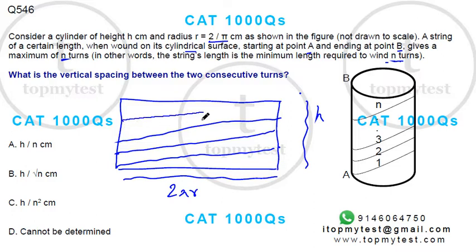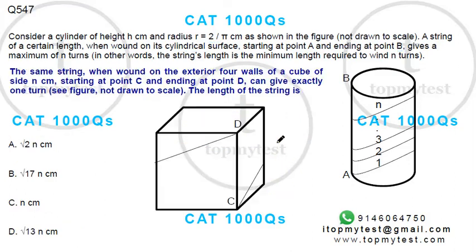To the last turn it'll go till this point, right? Now the question is what is the vertical spacing between two turns. You're dividing into n parts, height is h, so the vertical spacing between two consecutive turns will be h/n. Option A will be the correct choice - pretty straightforward. You're dividing into n pieces so h/n will be the length of each piece. Let's try the next one.